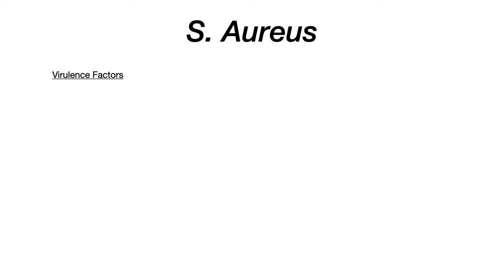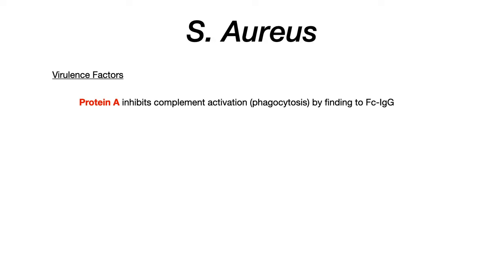Now let's talk about the virulence factors for Staph aureus — there are about five that you want to know. Some of them are not that bad to memorize because the name tells you exactly what it does. Let's begin with protein A. Protein A is a protein attached to Staph aureus, and when Staph aureus binds somewhere, protein A will bind to the Fc portion of immunoglobulin G — the Fc is just the constant portion.